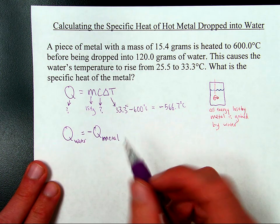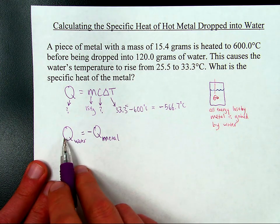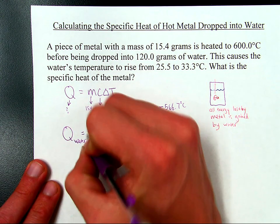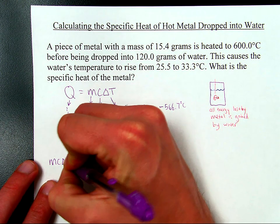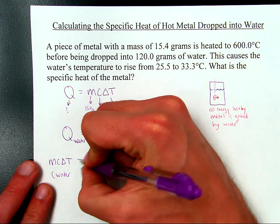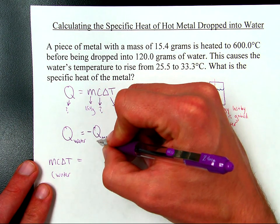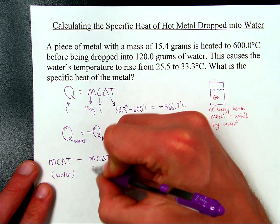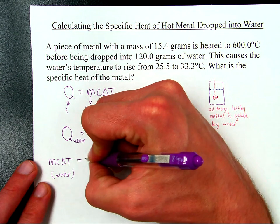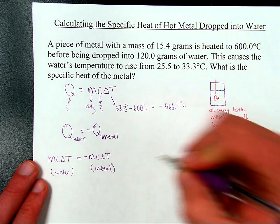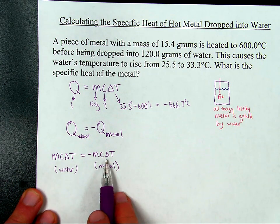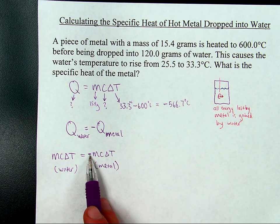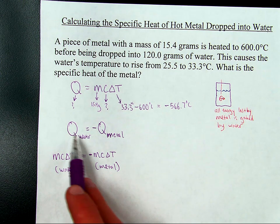Q equals MC delta T. So we can say that if Q equals negative Q, then MC delta T equals negative MC delta T. So we're going to say Q of water is equal to MC delta T of water, and Q of metal is MC delta T for metal. And just as there's this negative sign here, I'll put this negative sign here. Because this negative sign is left over here to show that metal is losing energy, water is gaining it.